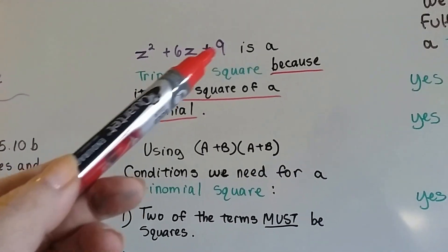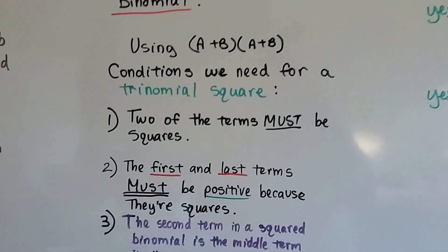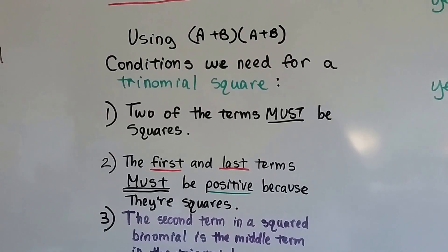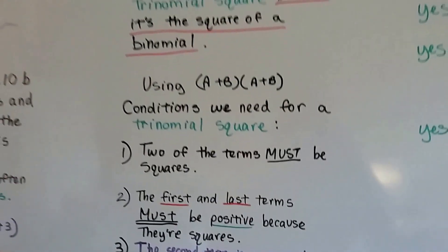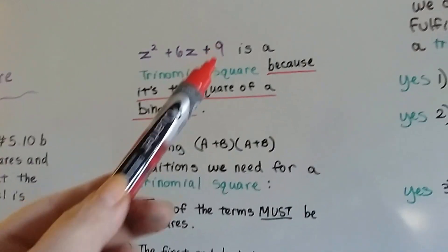And if we use this (a+b)(a+b), the conditions we need for a trinomial square would be: two of the terms must be squares.